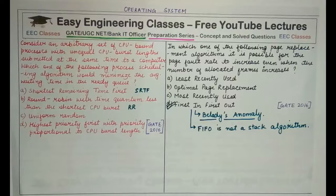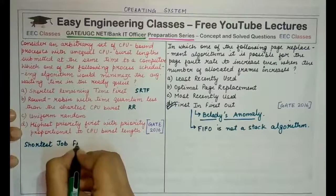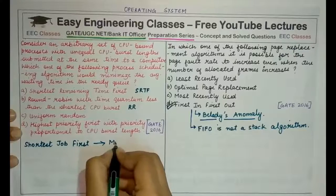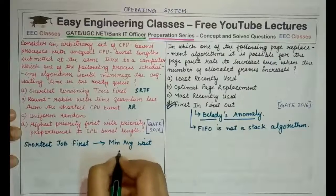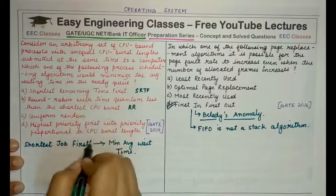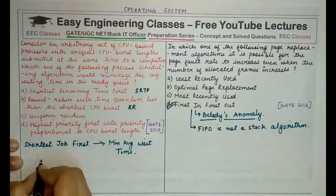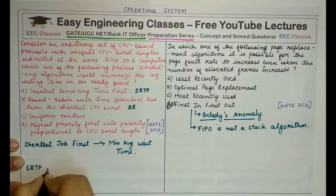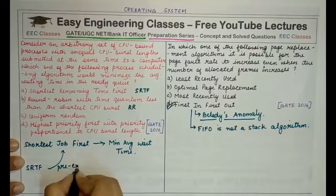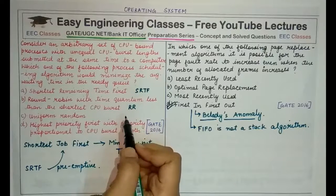In CPU scheduling, the best algorithm is Shortest Job First (SJF) because it gives the minimum average waiting time. SJF is not listed here, but Shortest Remaining Time First (SRTF) is — and SRTF is the preemptive version of SJF. So the best option is Shortest Remaining Time First, as it would give minimum average waiting time.